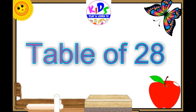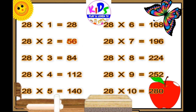Let's repeat. 28 1s are 28. 28 2s are 56. 28 3s are 84. 28 4s are 112. 28 5s are 140.